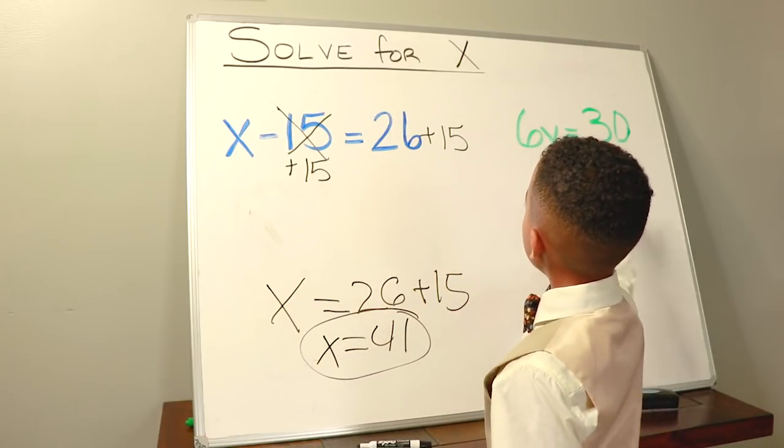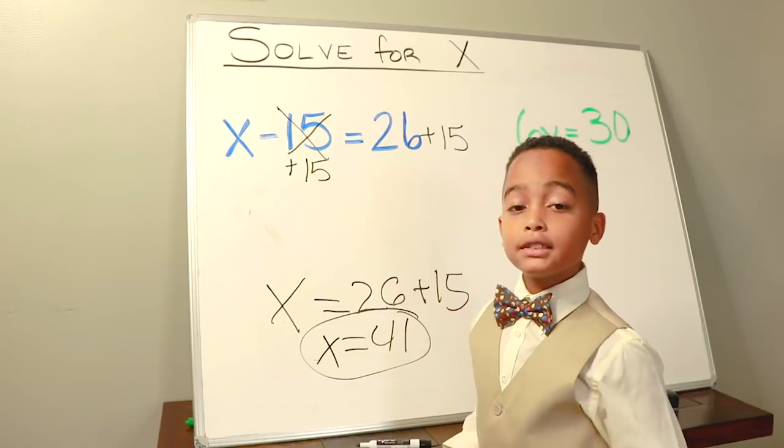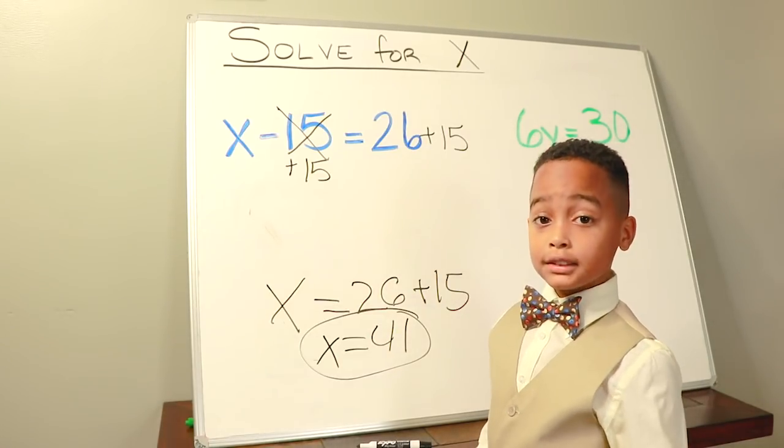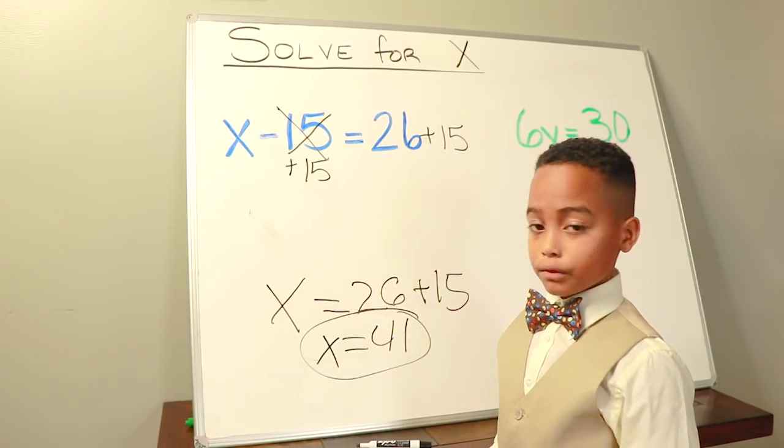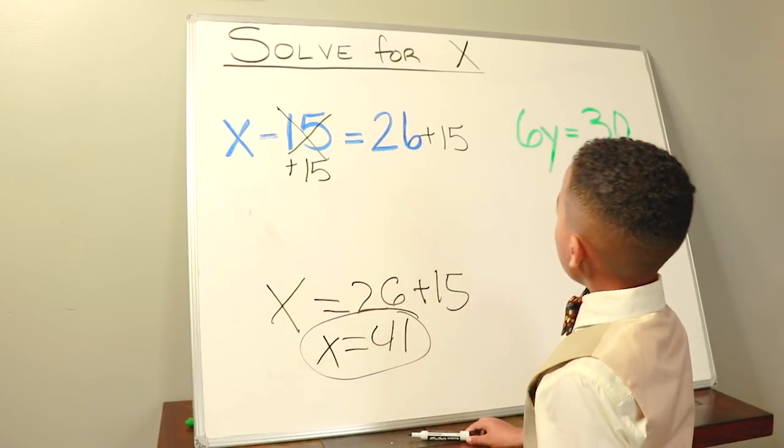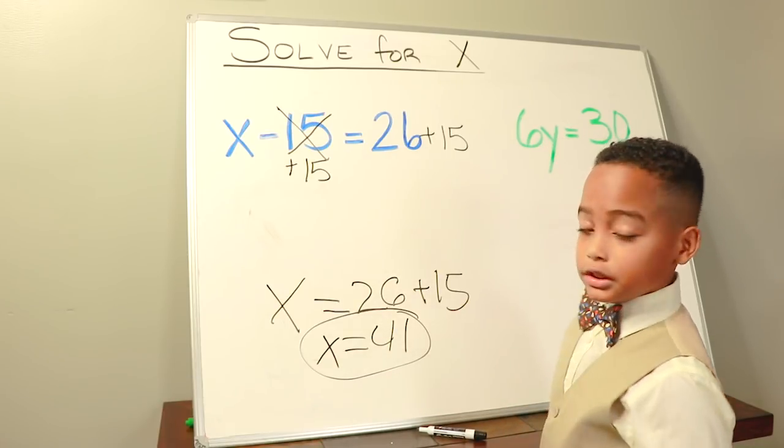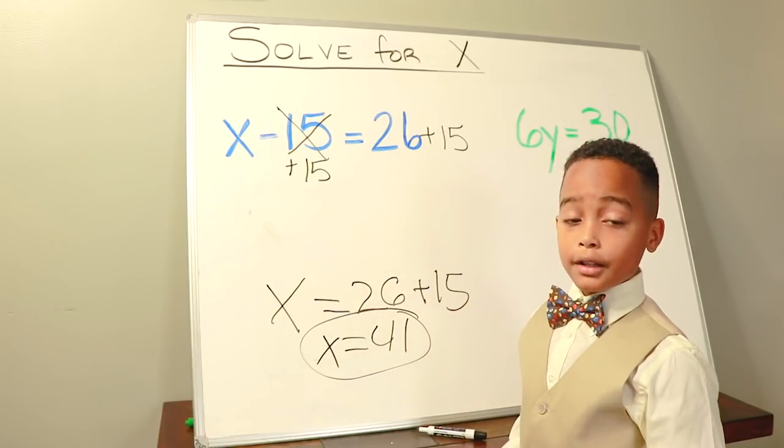You see we have 6y equals 30. That means 6 multiplied by something equals 30. Now we have multiplication, so the inverse operation of that is division.